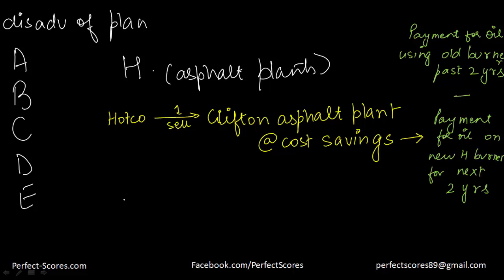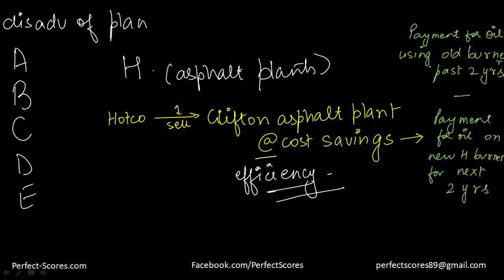If you put it on the scratch paper, HotCo is planning to sell one of its burners to Clifton asphalt plant at no upfront cost. It is so confident of its own efficiency that it is only going to take payment in terms of cost savings — that is, what Clifton paid for oil using the old burners in the past two years, minus what Clifton will pay for oil with the new HotCo burners over the next two years. An estimated payment will be adjusted after two years to equal the actual cost savings. That is the plan.